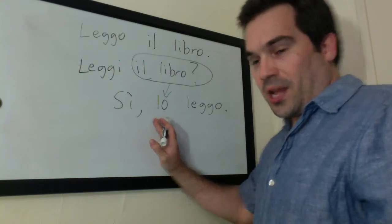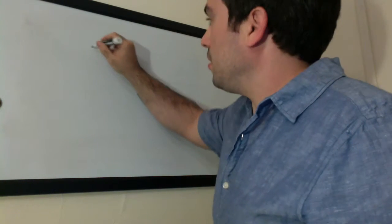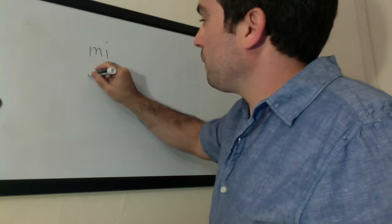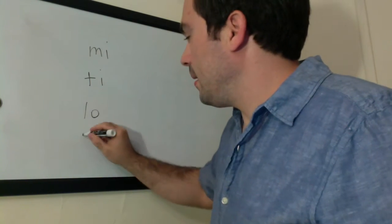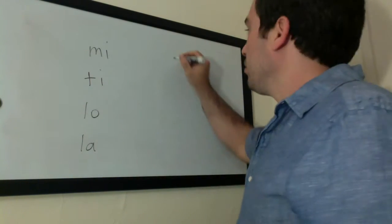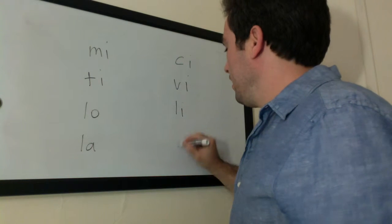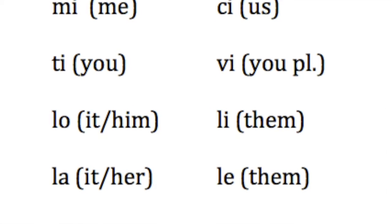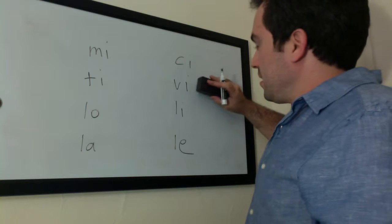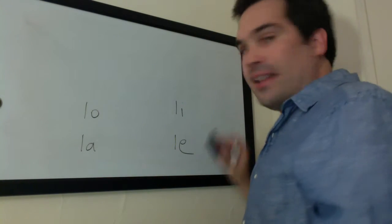Attenzione. The direct object pronouns in Italian are: mi, ti, lo, la, ci, li, and le. So let's pay specific attention to lo, la, li, and le.